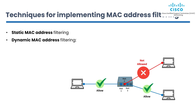There are two primary techniques for implementing MAC address filtering. First is static MAC address filtering, which involves manually adding approved MAC addresses to a network device such as a router or switch. This technique is commonly used in small networks with a limited number of devices. Second is dynamic MAC address filtering, which involves creating a dynamic list of approved MAC addresses based on devices currently connected to the network. This technique is commonly used in larger networks with a higher number of devices.